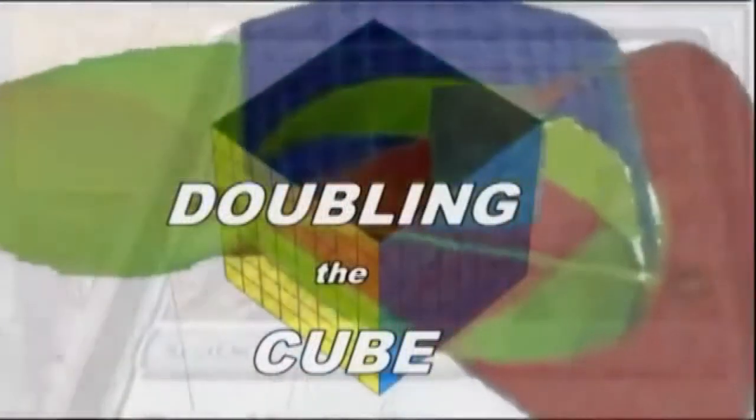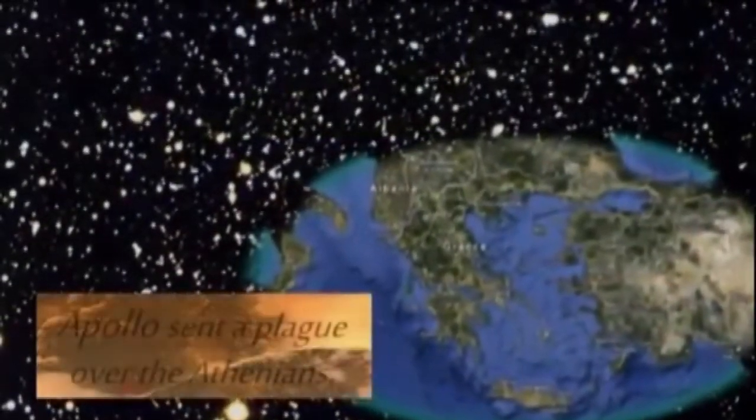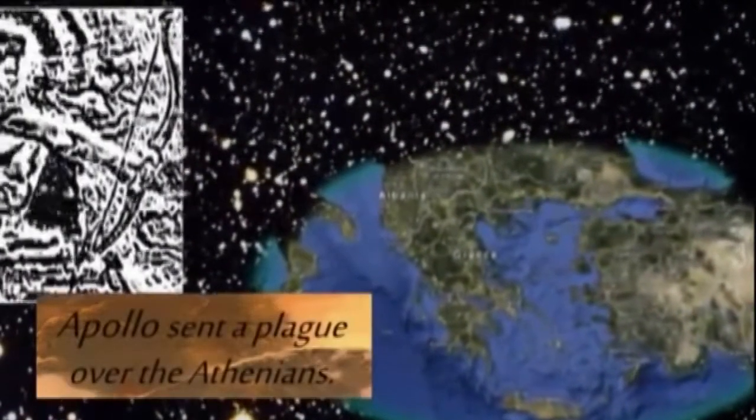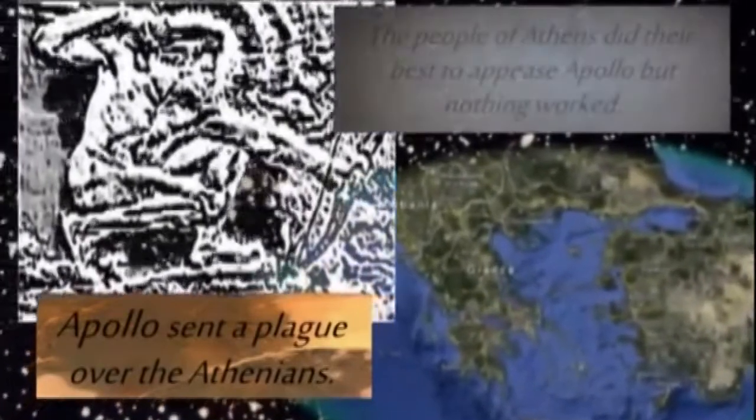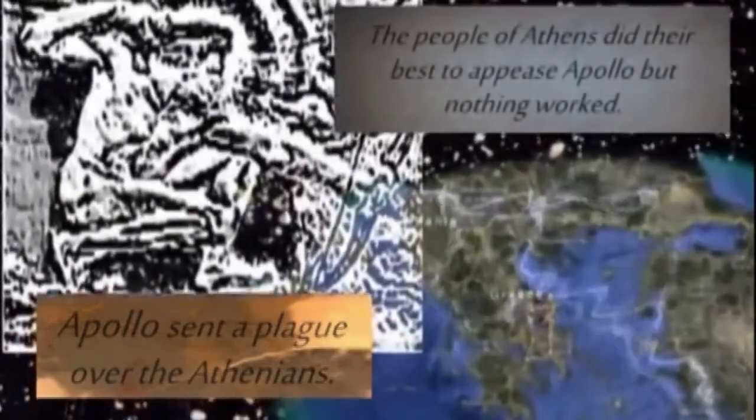Also known as the Delian Problem, doubling the cube. We'll look at the story. So as the story is told, it has to do with these math things built into legend. Apollo, who in his arrow, sent a plague over the people of Athens.